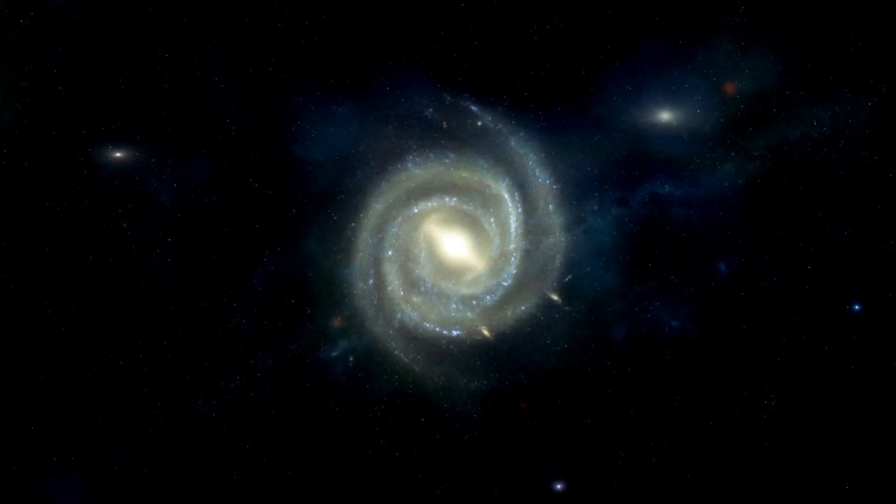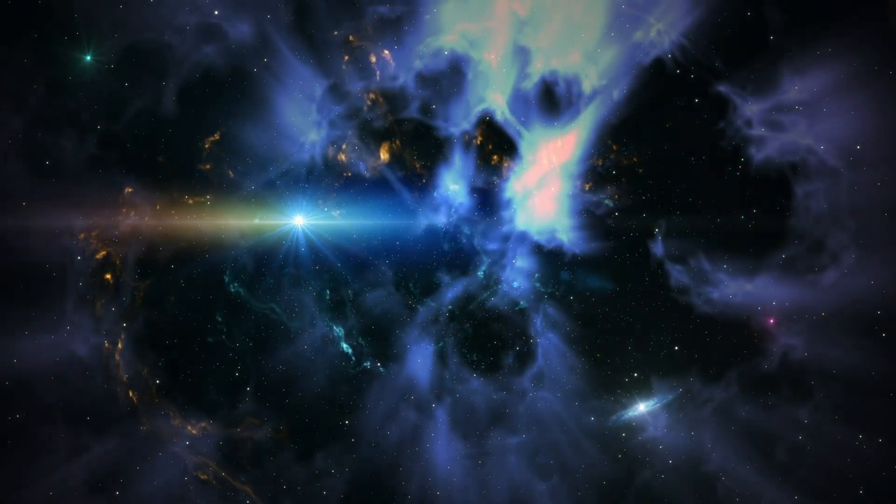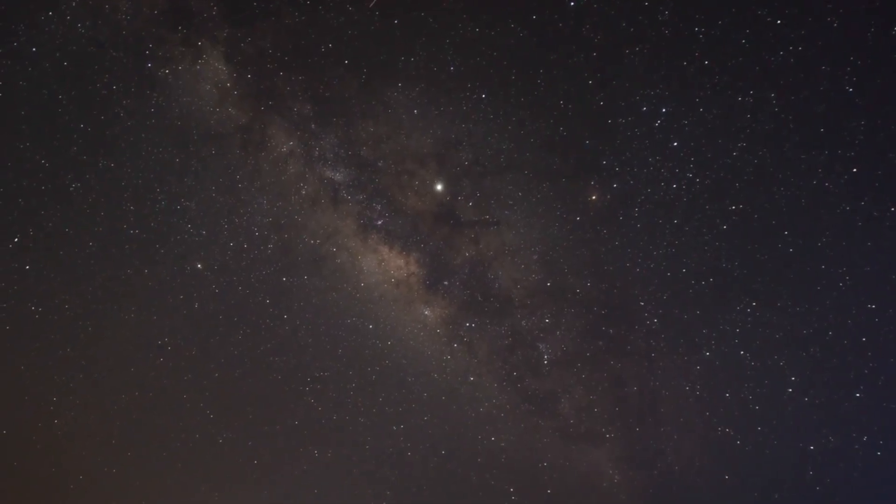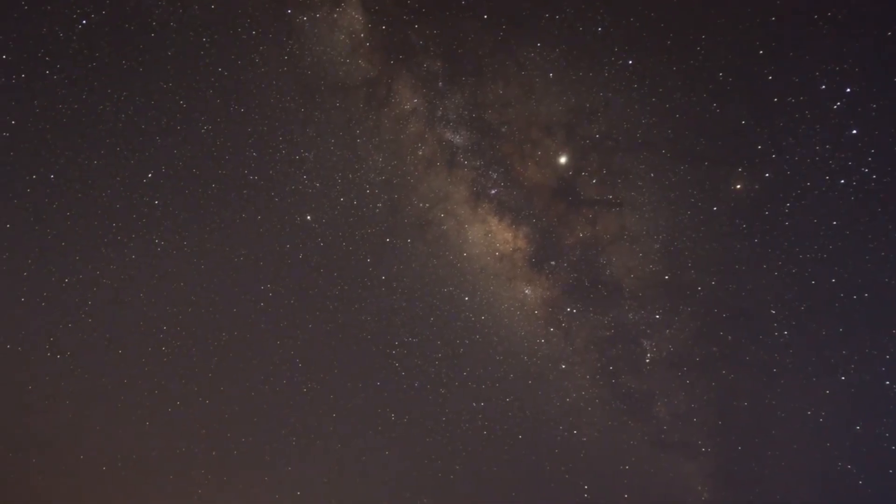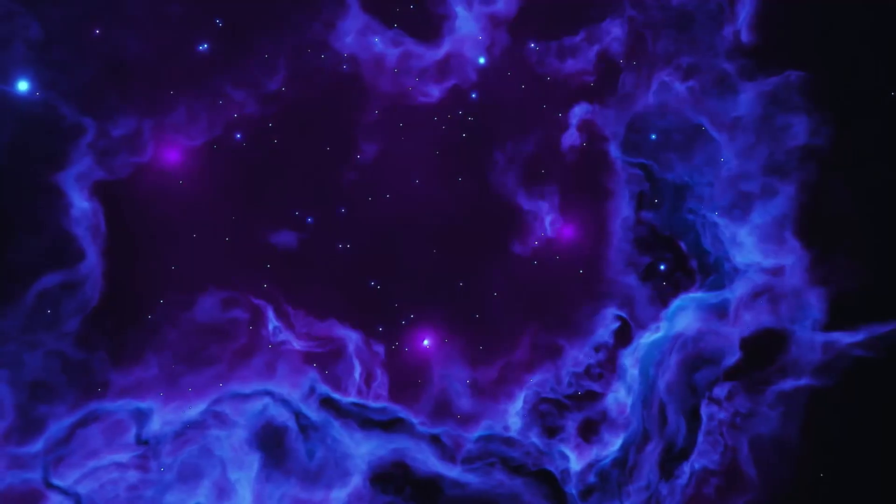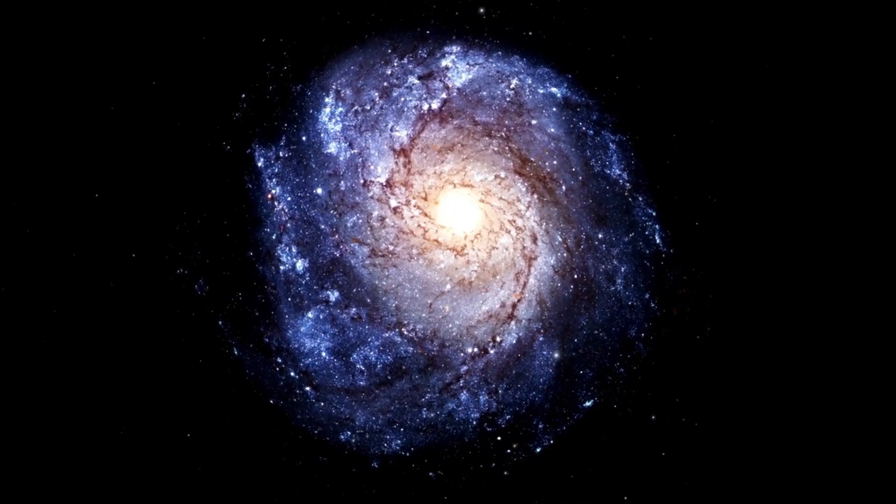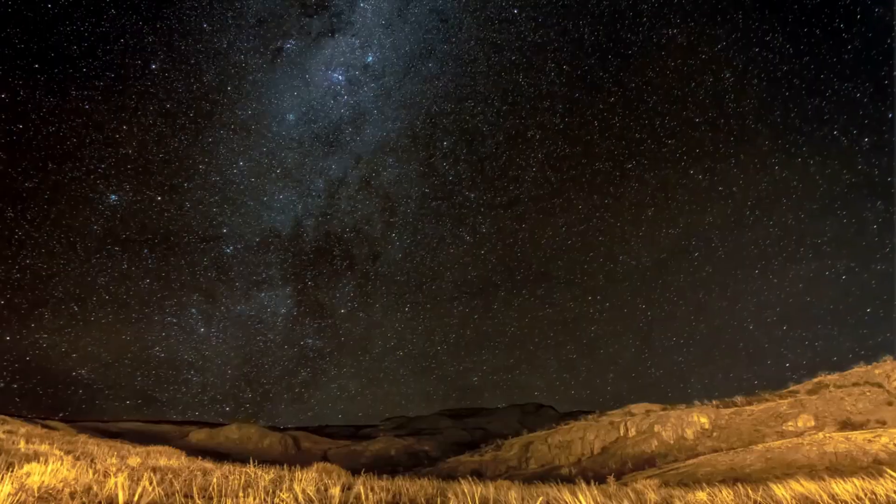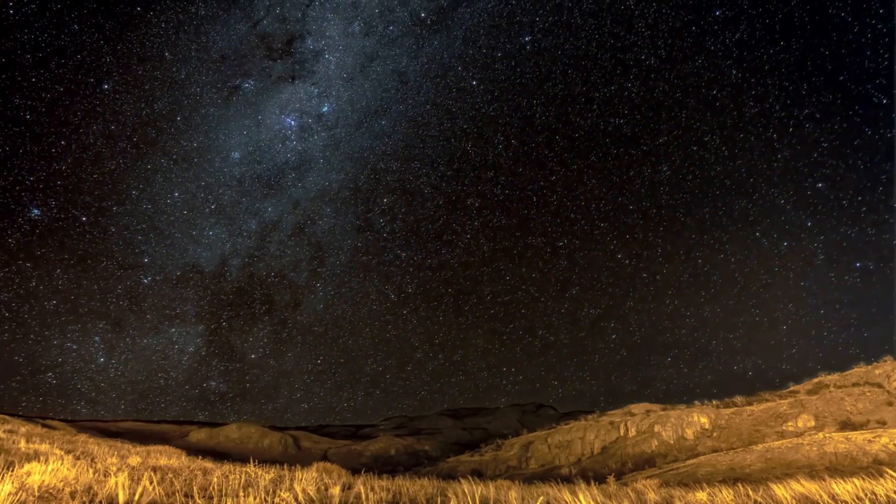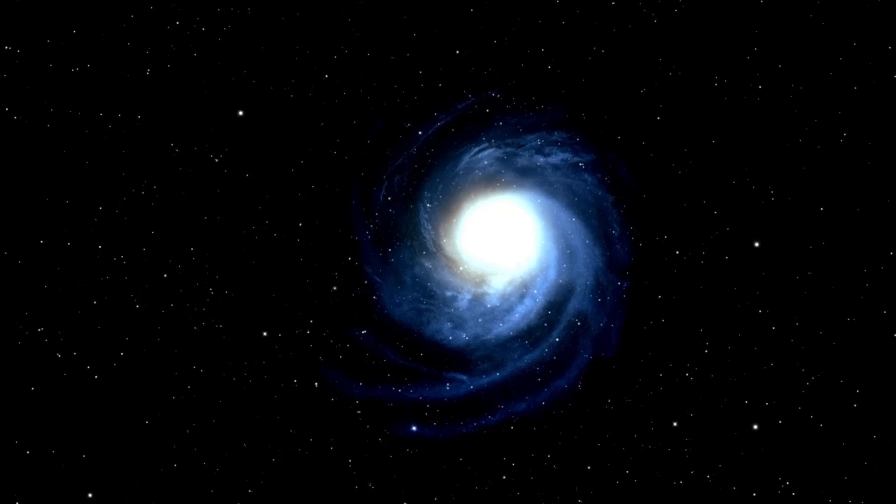Betelgeuse's status as a red supergiant provides valuable insights into the later stages of stellar evolution. These stages involve the fusion of heavier elements in the star's core, leading to the production of elements like carbon, oxygen, and iron. Studying Betelgeuse helps astronomers understand how stars evolve and enrich the universe with chemical elements. The variability and complex behavior of Betelgeuse challenge astrophysical models and theories.